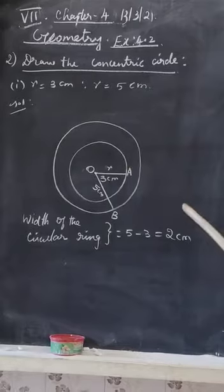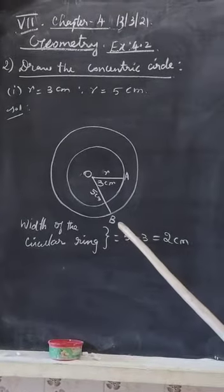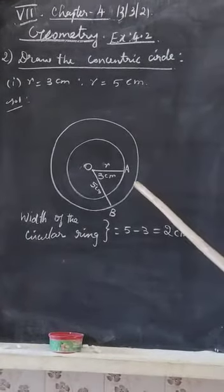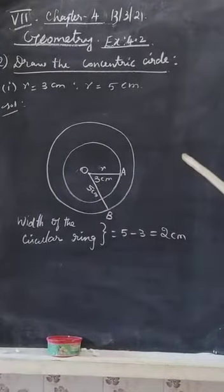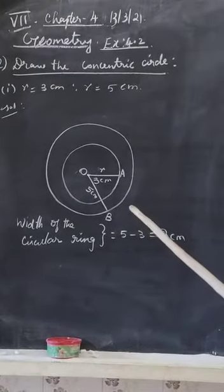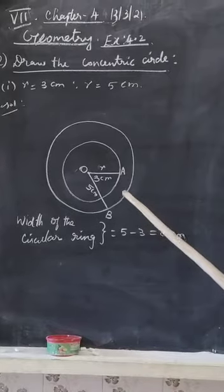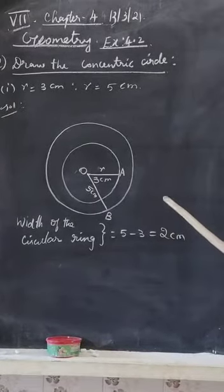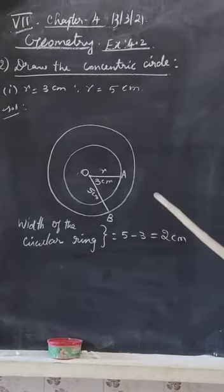First, I'm drawing the 3 centimeter circle. Again, I'm going to use the same center to draw the second circle. I'm marking O as the center point, and the edge points are A and B. So r is 3 centimeters and here 5 centimeters.